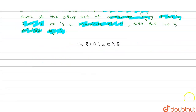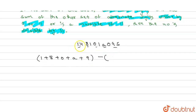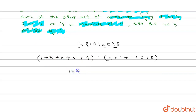Now let's check the sum of alternate digits. Taking the first set of alternate digits: 1 plus 8 plus 0 plus A plus 9, which gives us 18 plus A. For the second set of alternate digits: 4 plus 1 plus 1 plus 0 plus 5, which equals 11.